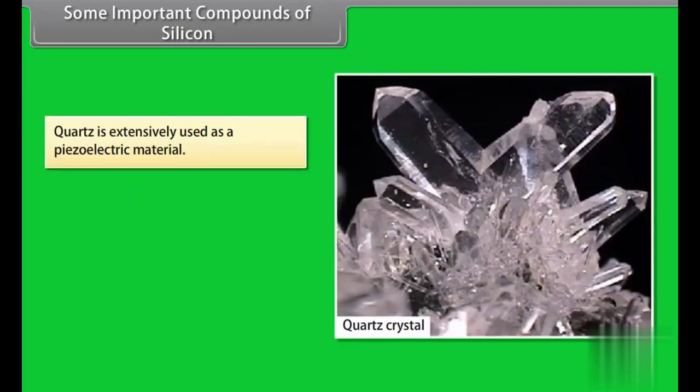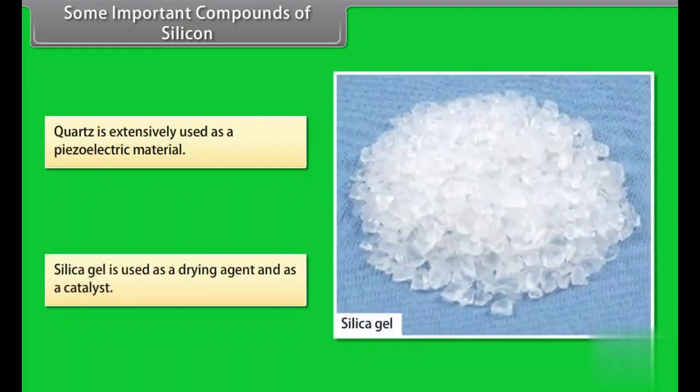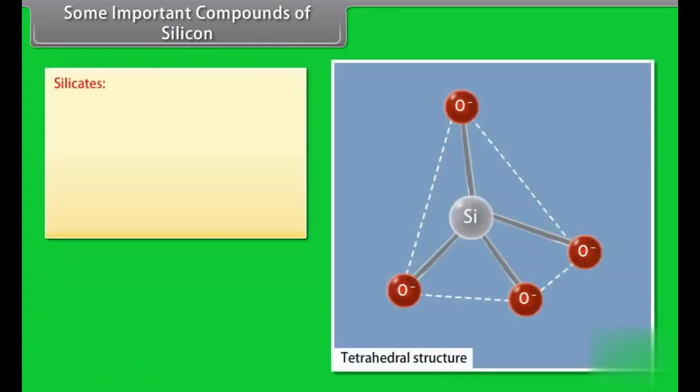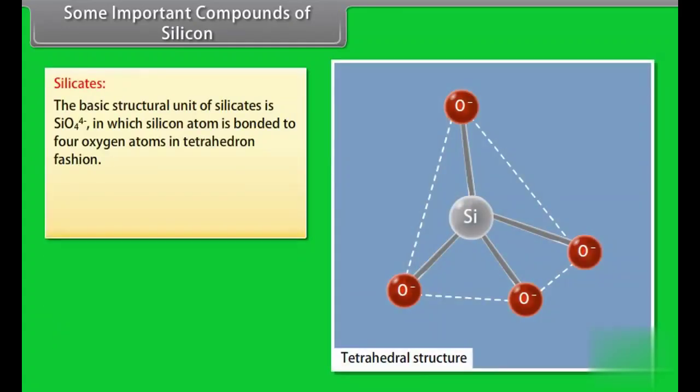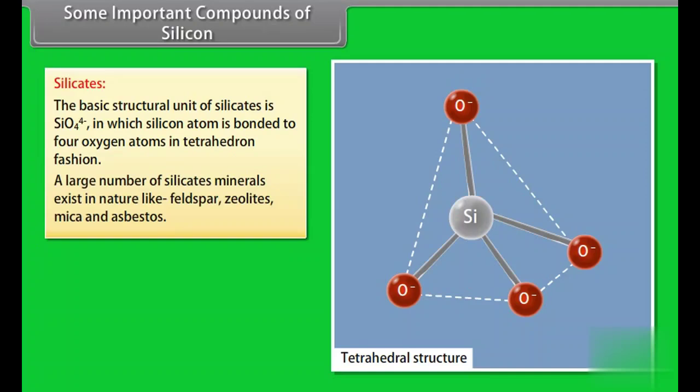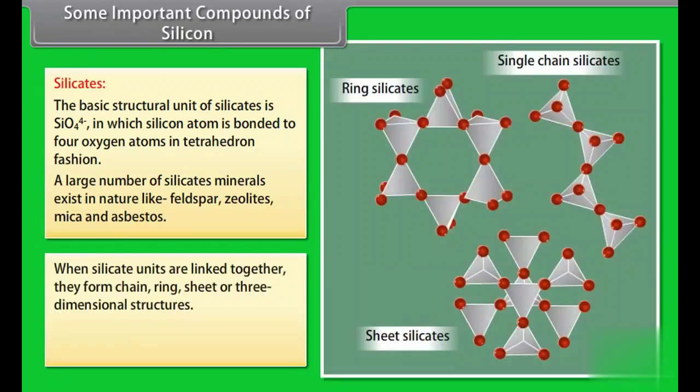Quartz is extensively used as piezoelectric material. Silica gel is used as drying agent and as a catalyst. Silicates. The basic structural unit of silicates is SiO4 4- in which silicon atom is bonded to four oxygen atoms in tetrahedral fashion. A large number of silicate minerals exist in nature like feldspar, zeolites, mica and asbestos. When silicate units are linked together, they form chain, ring, sheet or three-dimensional structures. Glass and cement are two important man-made silicates.